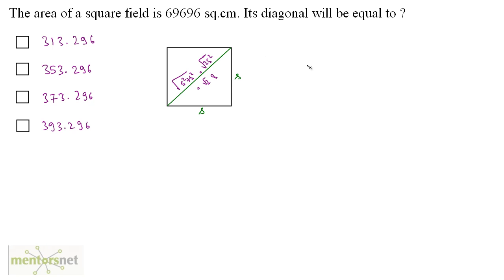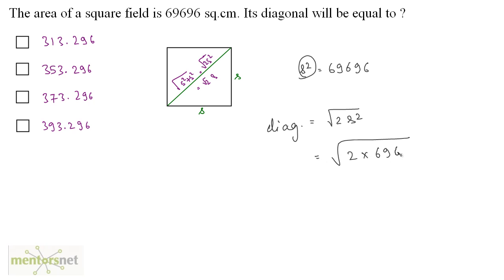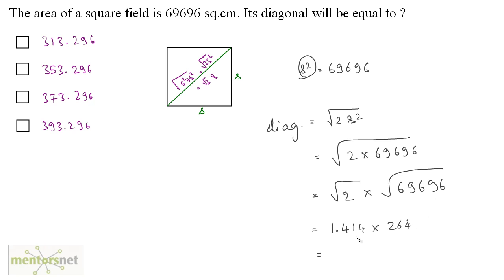You have been given the area, and area = s², so s² = 69,696. The diagonal = √(2 × 69,696) = √2 × √69,696. √2 = 1.414 and √69,696 = 264, so the diagonal = 1.414 × 264 = 373.296 centimeters. Option C is the correct answer.